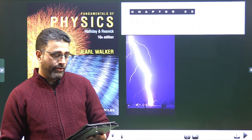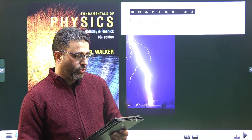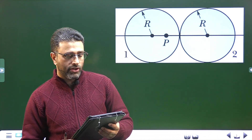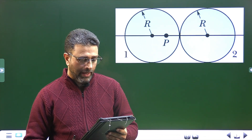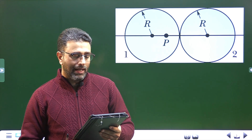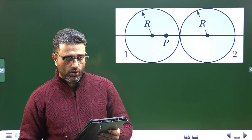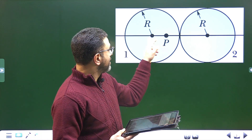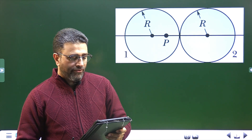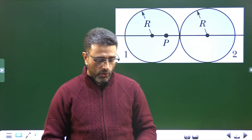Assalamu alaikum warahmatullahi wabarakatuh. Problem 54, Gauss law, chapter 23. The figure shows in cross section two solid spheres with uniformly distributed charge throughout their volumes. Each has radius R. Point P lies on a line connecting the centers of the spheres at radial distance R/2 from the center of sphere 1. If the net field at point P is 0, what is the ratio Q2/Q1 of the total charges?